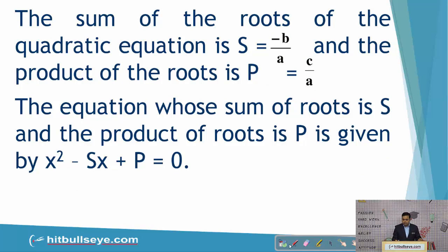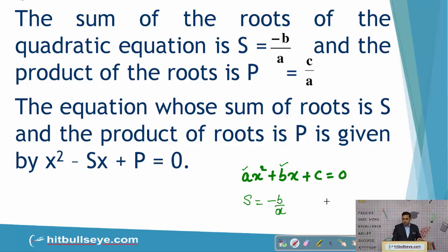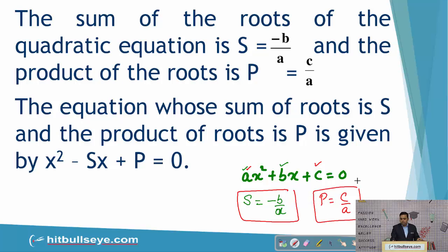In any quadratic equation ax² + bx + c = 0, the sum of the roots is equal to −b/a and the product of roots is given by c/a. So the sum of roots is minus the coefficient of x divided by the coefficient of x², giving −b/a. Similarly, the product of roots is equal to the constant term divided by the coefficient of x², giving c/a.